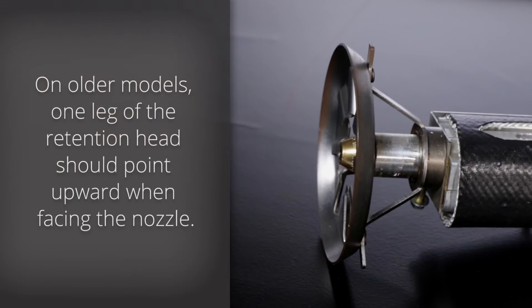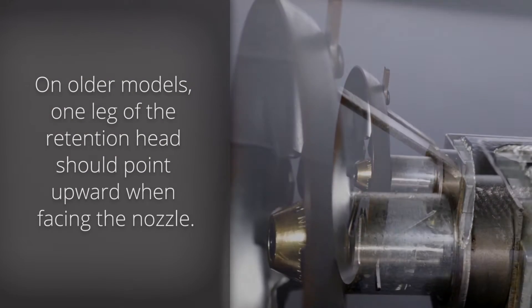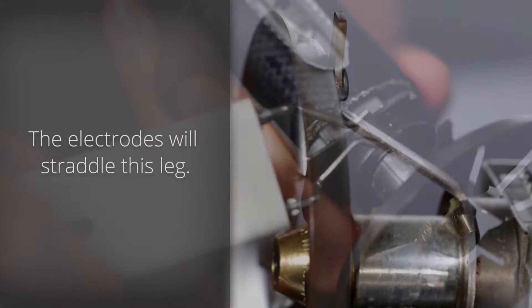On older models, one leg of the retention head should point upward when facing the nozzle. The electrodes will straddle this leg.